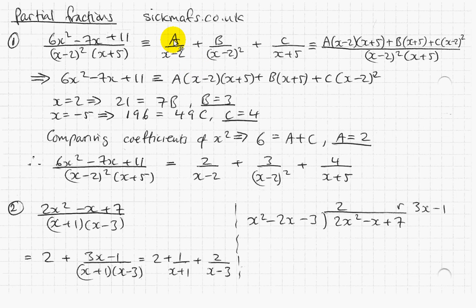A I have to times top and bottom by x minus 2 and x plus 5 to make the denominator like this. I have to times top and bottom over here by x plus 5 because I've already got x minus 2 squared as this one has, I just need the x plus 5 now. And times top and bottom over here by x minus 2 squared. And then bring it all together and I'll have this basically.